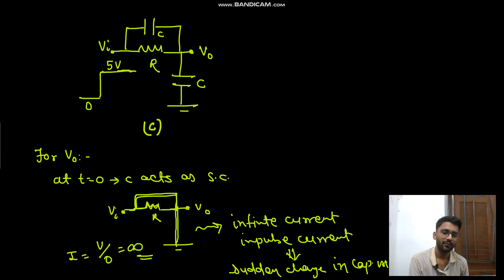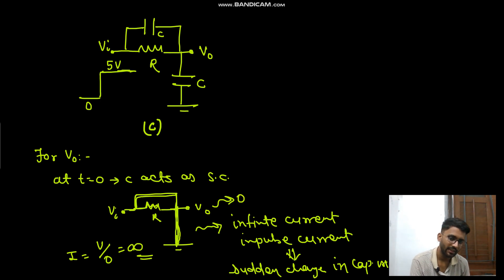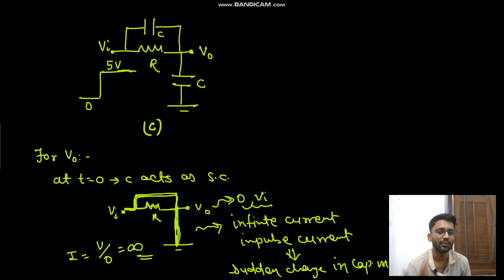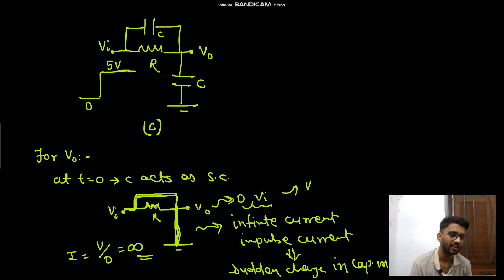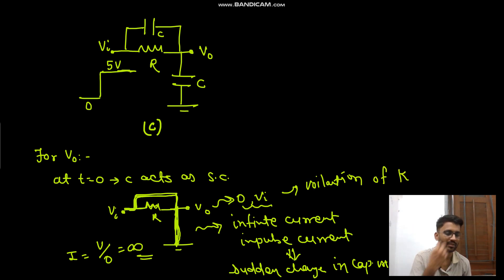At t equals zero the complete circuit is short circuited. If you go by one direction, V0 should be zero; if you go by the other direction, V0 should equal Vi. There is ambiguity — a violation of KVL. This says it should be V0 and this says it should be Vi, so there is a violation of KVL.